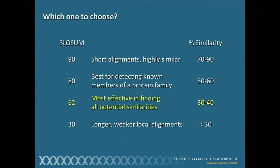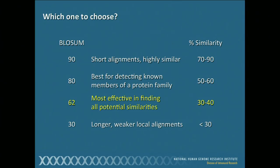The one in yellow, BLOSUM62, is the default. From testing, this is the most effective in finding all potential similarities, and it's the default value when you go to NCBI's BLAST website. But I would actually defer to the guru in this field, Steve Altschul, the driving force behind the development of BLAST, who recommends when you don't really know what you're looking for to use a triple BLAST strategy: pick the default, pick a higher number, pick a lower number, and run your query sequence three times using those three different matrices. By tweaking these values, you're going to start to deduce relationships that you didn't know existed.